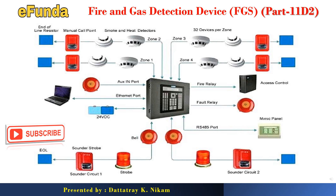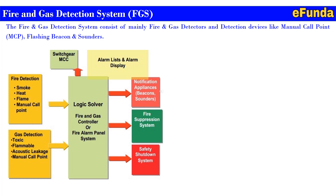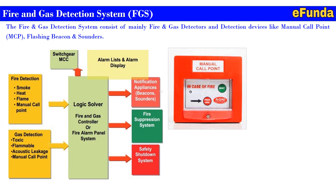So let's begin with our today's topic: fire and gas detection devices, FGS Part 11d. The fire and gas detection system consists of fire and gas detectors and detection devices. Referring to the block diagram, all detection devices are indicated. We have already seen fire detection and gas detection. Now we are going to see the manual call point (MCP), flashing beacon, and sounder.